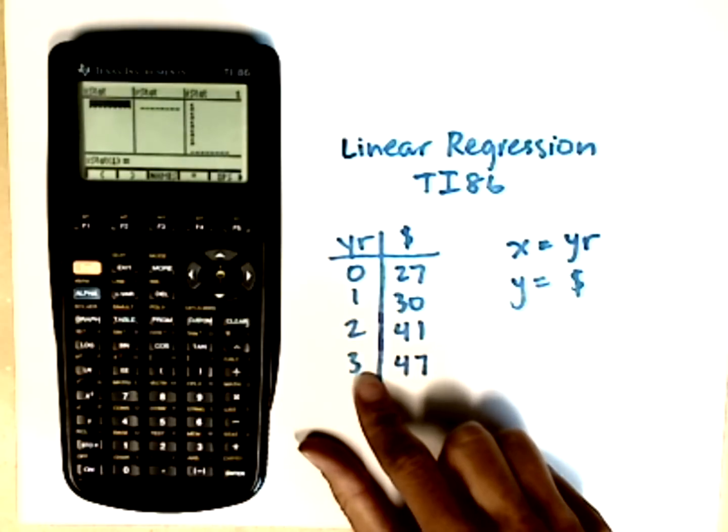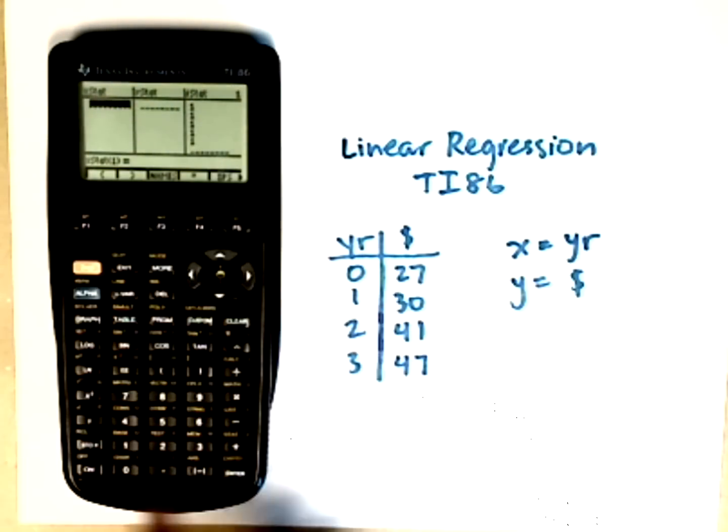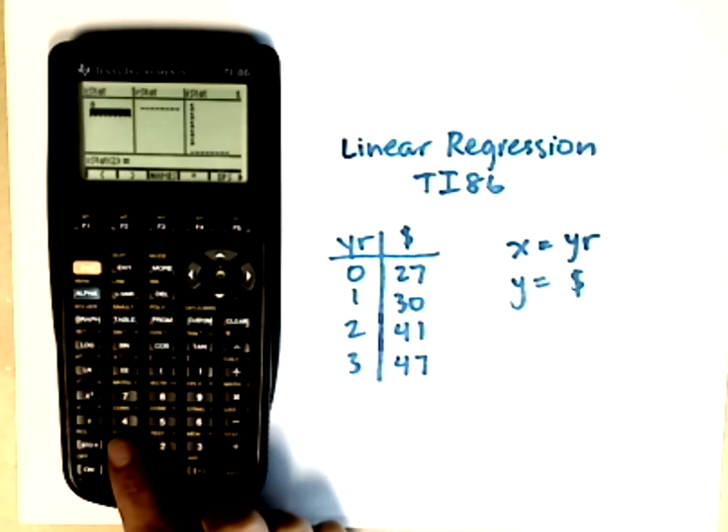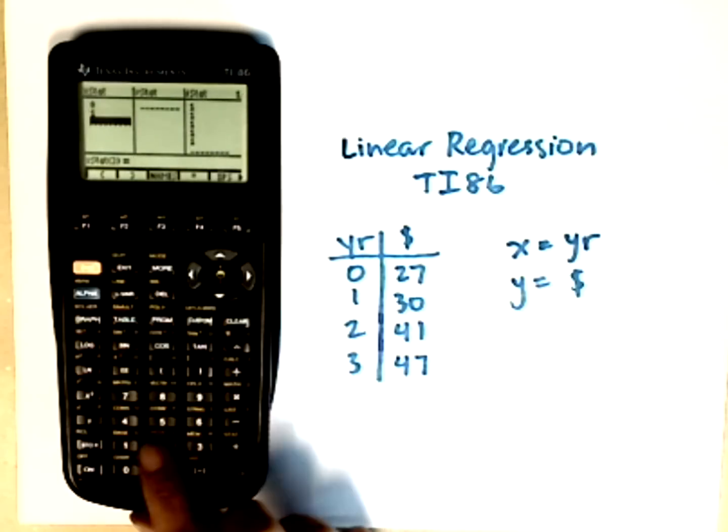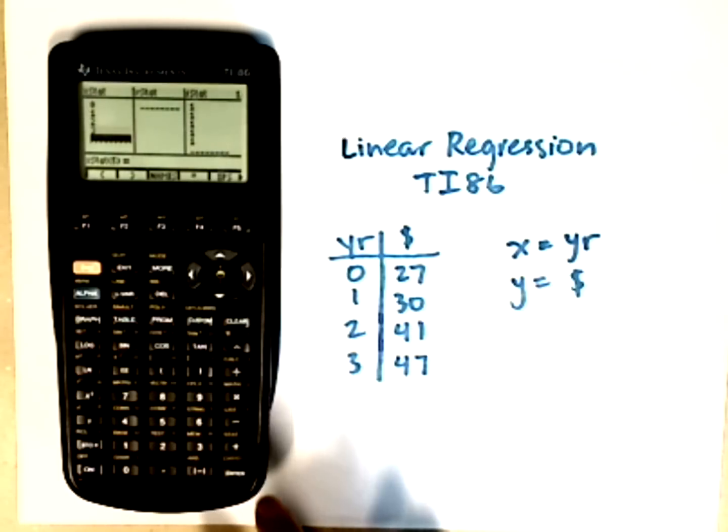Now over to my x stat list. These are going to be my year values: 0, 1, 2, and 3. So I'm going to hit 0, and then enter. You could do the down arrow if you want, but enter is closer. 1, enter, 2, enter, 3, enter.